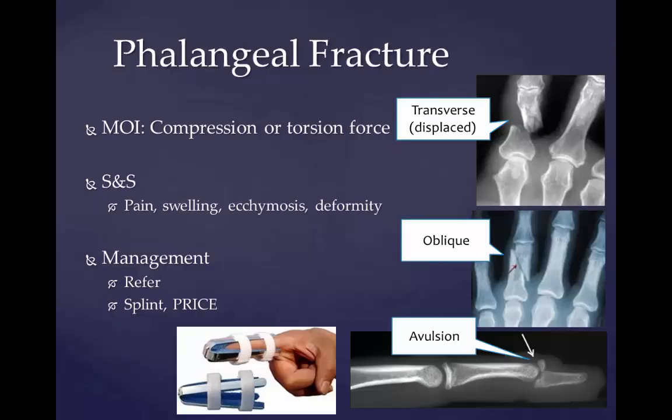Treatment for a broken finger depends on the location of the fracture and whether it is stable. Taping the fractured finger to an adjacent intact finger may treat a stable fracture. Unstable fractures require immobilization with a splint. If the fracture is unstable, surgery may be needed. Surgery stabilizes the fracture when there are multiple fractures, loose bony fragments, a joint injury, damage to ligaments or tendons, unstable or displaced or open fractures, or an impaction fracture.